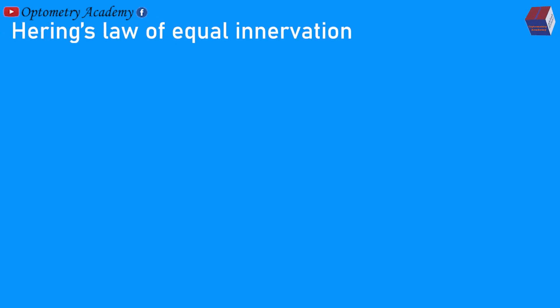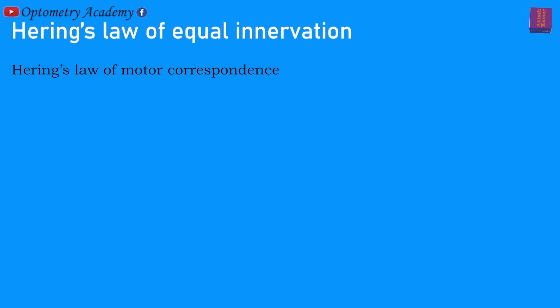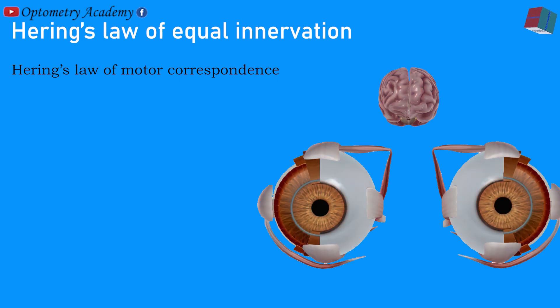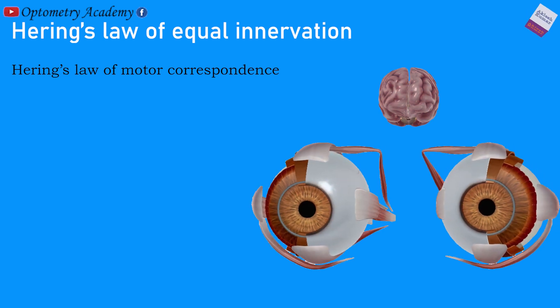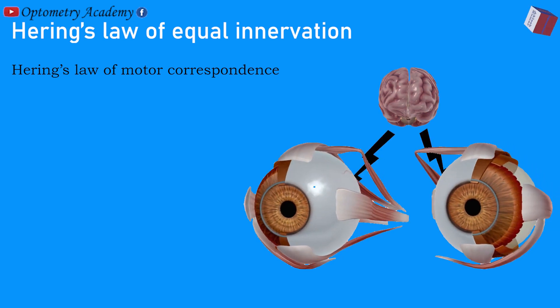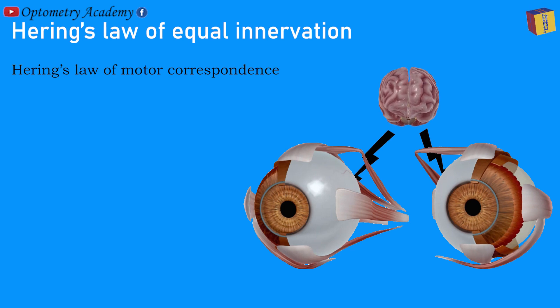Herring's Law of Equal Innervation, also known as Herring's Law of Motor Correspondence, states that an equal and simultaneous innervation flows from the brain to a pair of muscles of both eyes, which contract simultaneously in different binocular movements.